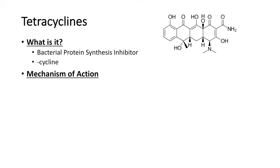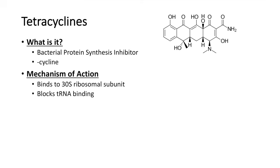So how do tetracyclines actually work? What is their mechanism of action? Tetracyclines actually operate by binding to 30S ribosomal subunits. Prokaryotic cells have a 50S and a 30S ribosomal subunit, whereas eukaryotic cells have a 60S and a 40S ribosomal subunit. So these antibiotics target bacterial ribosomal subunits — the 30S ribosomal subunits. And by binding to the 30S ribosomal subunit, it actually blocks tRNA binding.